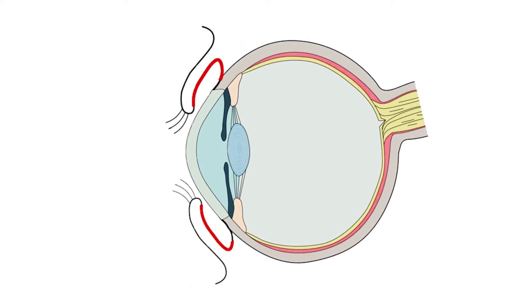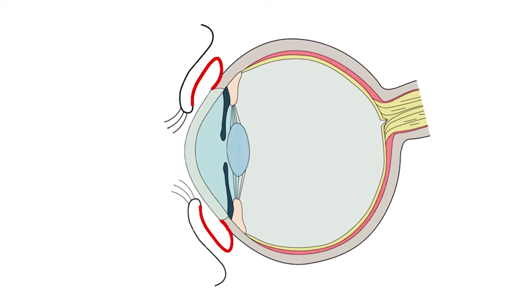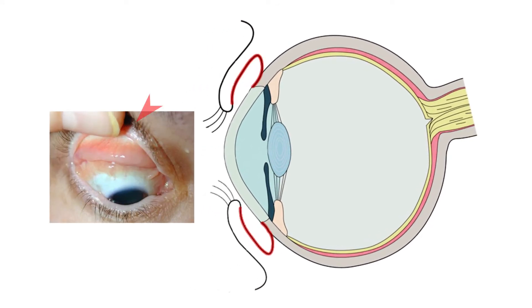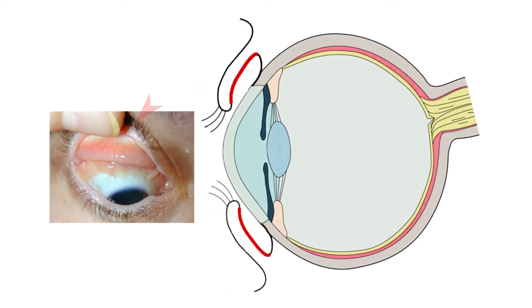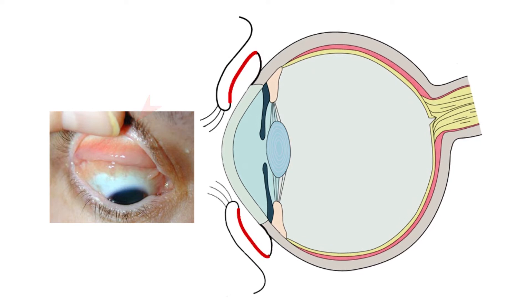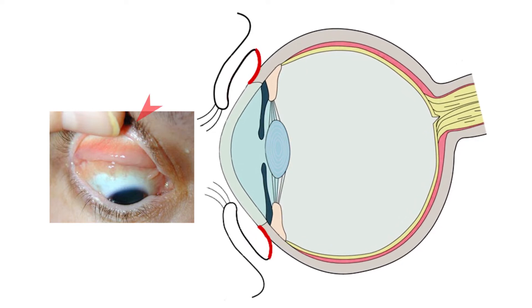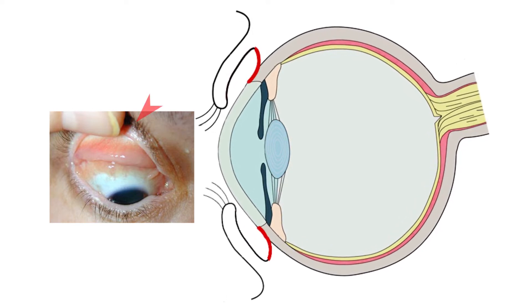Conjunctiva: the thin vascular mucous membrane covering the inner aspect of the eyelids — palpebral conjunctiva — and the sclera — bulbar conjunctiva.